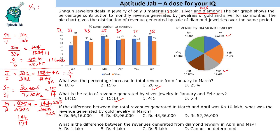The reason we do not reduce the ratio further is because the difference is given as 10 lakhs — so that means March revenue is 144 lakhs and April is 134 lakhs. In March, the revenue is 144 lakhs, and gold jewellery in March is 39%. So gold revenue = 144 × 39/100. That is 144 × 4 = 576, minus 144, giving approximately 56 lakhs 16 thousand. Multiplying directly: 39 × 4 = 156, carry gives 56.16 lakhs as the answer.